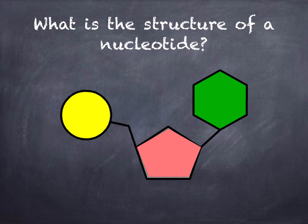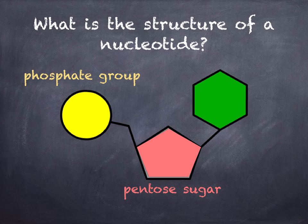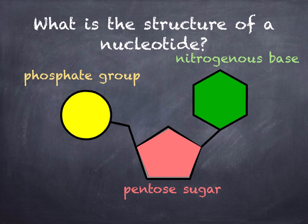Let's have a look at the structure of a nucleotide. Individual nucleotides are made up of three components: a pentose sugar, which can be two types — ribose, which you find in RNA, and deoxyribose, which you find in DNA — a phosphate group, and a nitrogenous base.